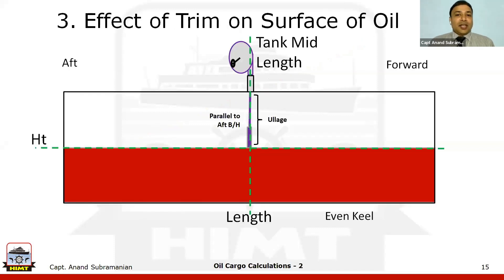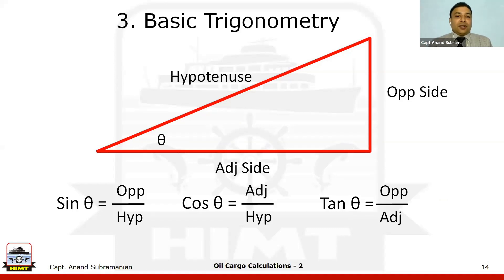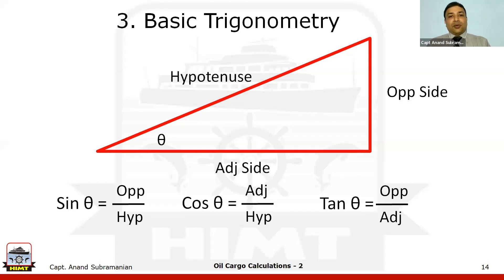We need trigonometry for the competency examination. On board, we already get the volume from ullage tables, which include trim and list corrections — so if you use the ullage table correctly, you don't need to go through all this. But in the examination, no ullage table is given, so we go back to mathematics and trigonometry to find the volume of oil. Finding the volume is the only difficult part; once you have it, getting the weight in air using VCF is straightforward.